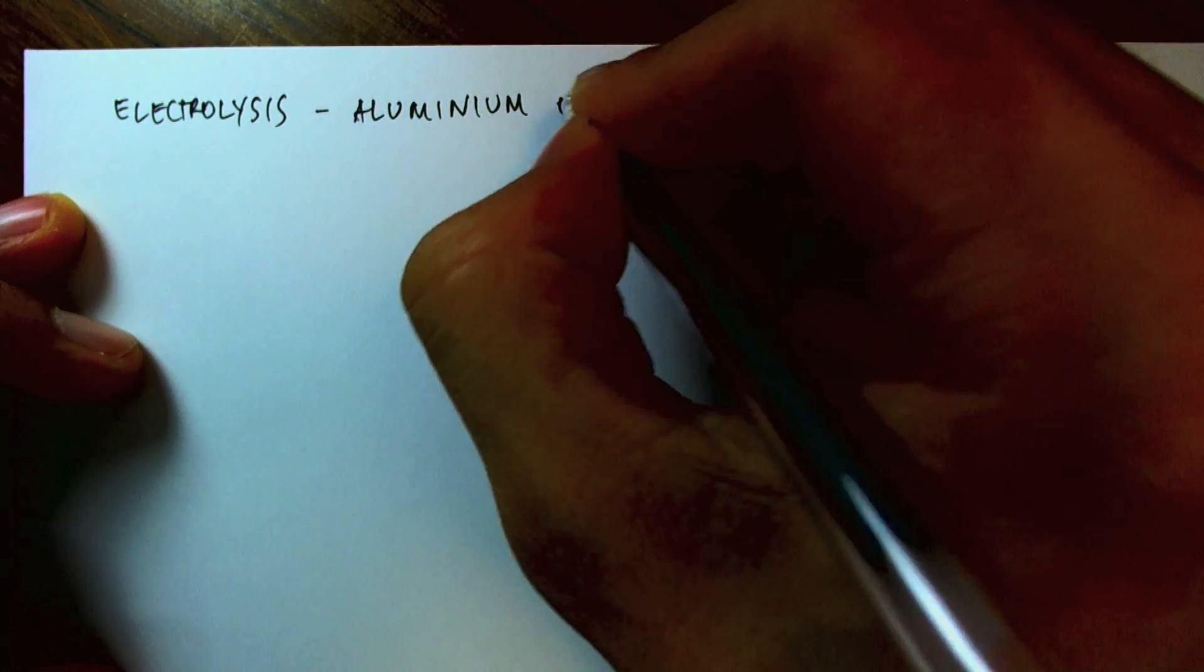In the last video, we looked at the application of electrolysis to plating one metal onto another metal. Now I would like to look at the extraction of aluminum using electrolysis. Electrolysis aluminum extraction.